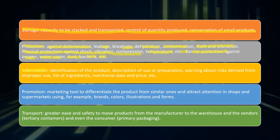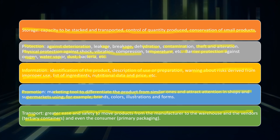Number 3 is information: identification of the product, description of use or preparation, warnings about risks derived from improper use, and a list of ingredients, nutritional data, and price. Number 4 is promotion: a marketing tool to differentiate the product from similar ones and attract attention in shops and supermarkets using, for example, brands, colors, illustrations, and forms. Number 5 is transport: greater ease and safety to move products from the manufacturer to the warehouse and vendors, using tertiary containers and even the consumer primary packaging.